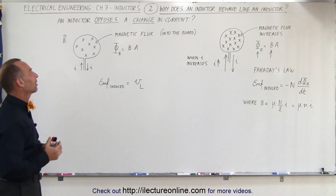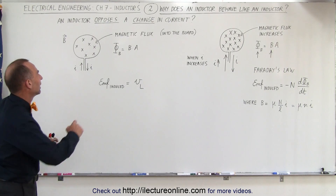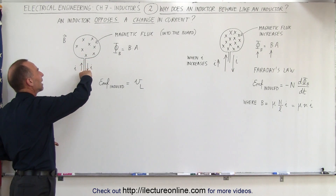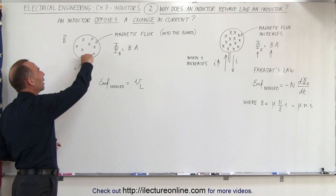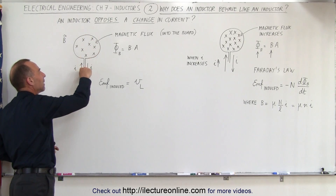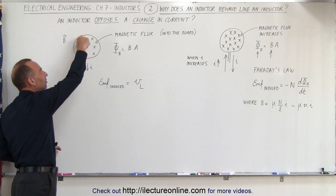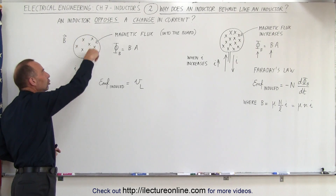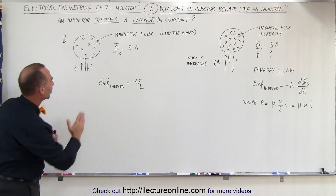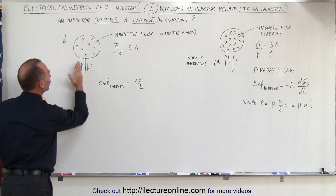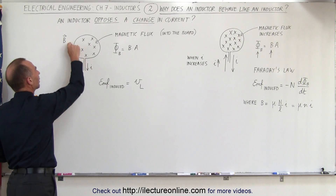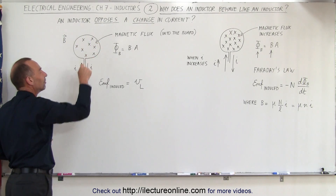Let's try to figure that out. Here we have a single loop — a wire going up, around the circle, and coming back down. So we have a single loop of wire, and let's send a current through that wire. The current will then go around the loop like this.